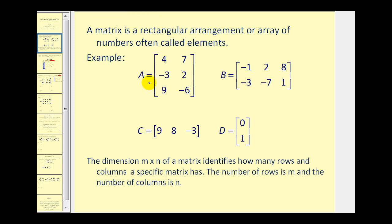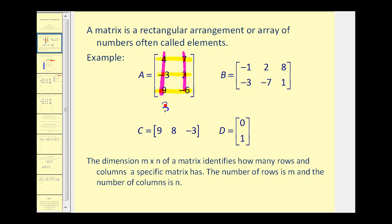So if we take a look at matrix A, rows go from left to right. This matrix has one, two, three rows — so counting down we have three rows. And this matrix has two columns, one, two. So this is a three by two matrix: three rows and two columns.